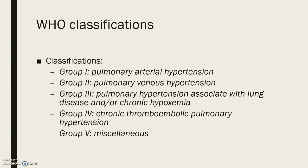Group 4 is pulmonary hypertension due to chronic embolic and thrombotic disease. Group 5 includes miscellaneous pulmonary hypertension of unclear or multifactorial mechanisms, such as hematological, systemic, metabolic causes, or tumor compression.